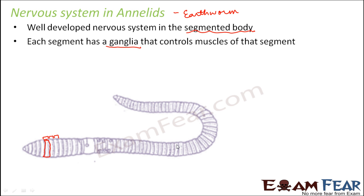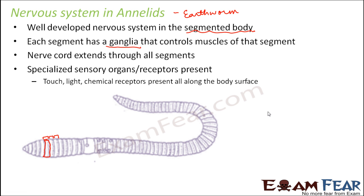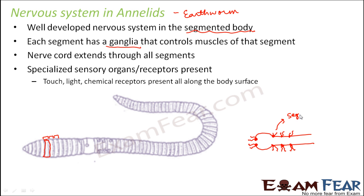The ganglia in each segment helps with the movement of that particular segment. This is why the earthworm crawls with each segment moving somewhat independently, yet in synchronization, because each segment's movement is controlled by a separate ganglia. A nerve cord extends through all the segments throughout the length of the body, with ganglia present at each segment — these are the segmental ganglia.